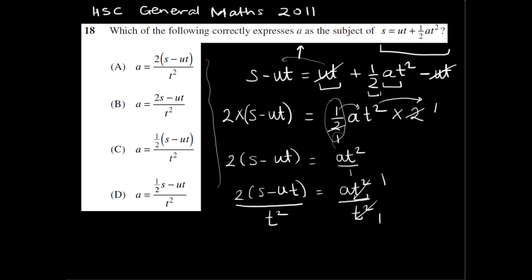And so a is 2 outside of S minus ut over t squared. So if you look at your options, that corresponds to option A. So that's our answer.